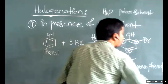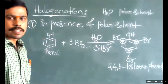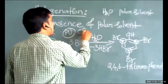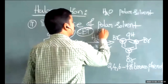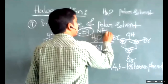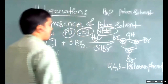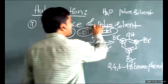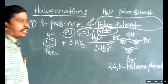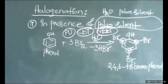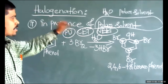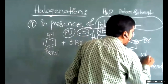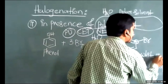The preparation of 2,4,6-tribromophenol is important for PUC level, CET, and NEET examinations. Halogenation of phenol in the presence of a polar solvent gives 2,4,6-tribromophenol as a white color precipitate. Students are advised to take a screenshot of the reaction on the screen.